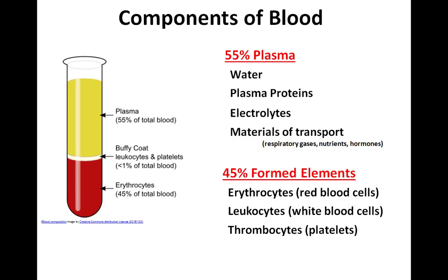What makes up our blood? Blood is a mixture of liquid and solids. Fifty-five percent of blood is the liquid portion known as plasma. It's mostly water, but there are also plasma proteins such as clotting factors and antibodies, electrolytes which function in osmotic balancing and pH buffering of the blood, and materials transported throughout the body such as dissolved oxygen and carbon dioxide, nutrients from the digestive system, and hormones from the endocrine system, just to name a few.